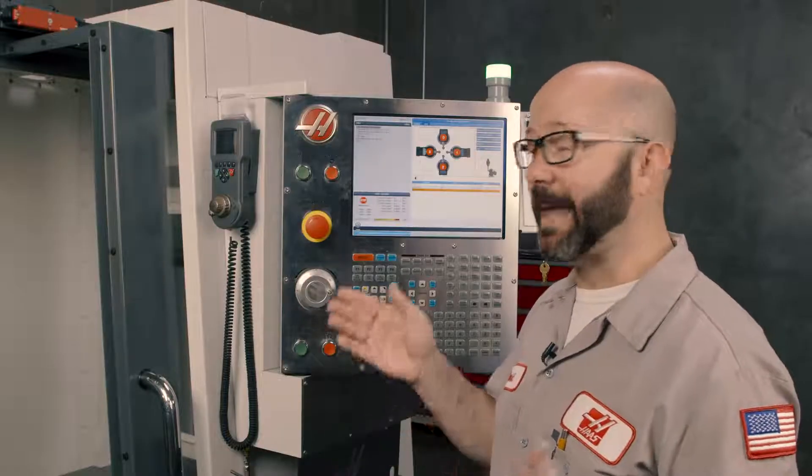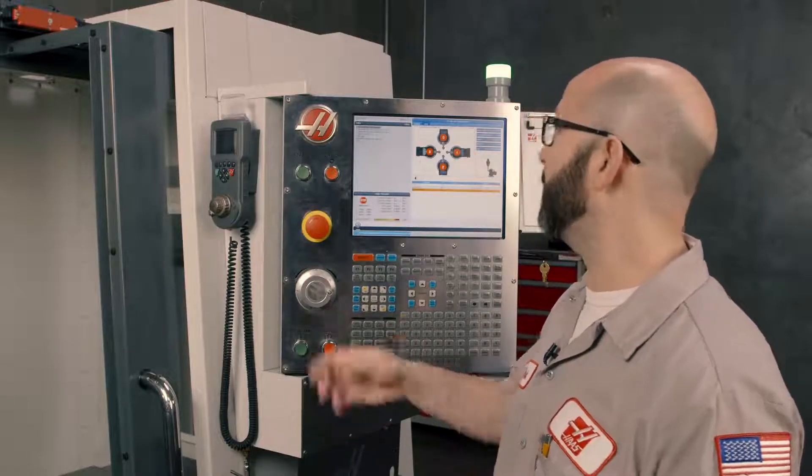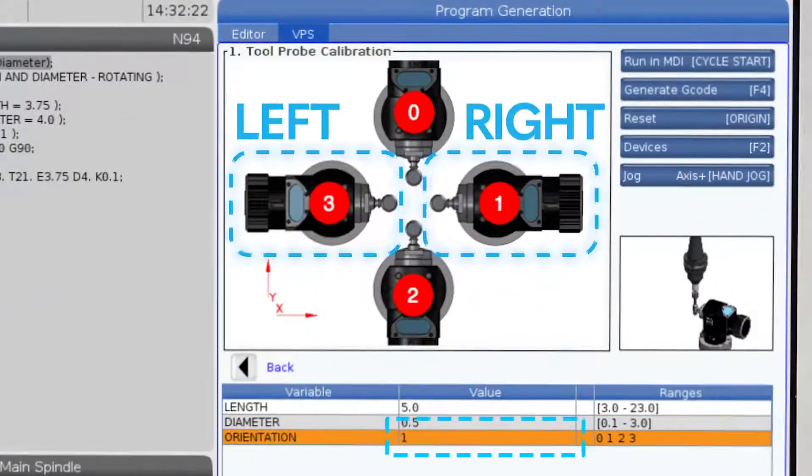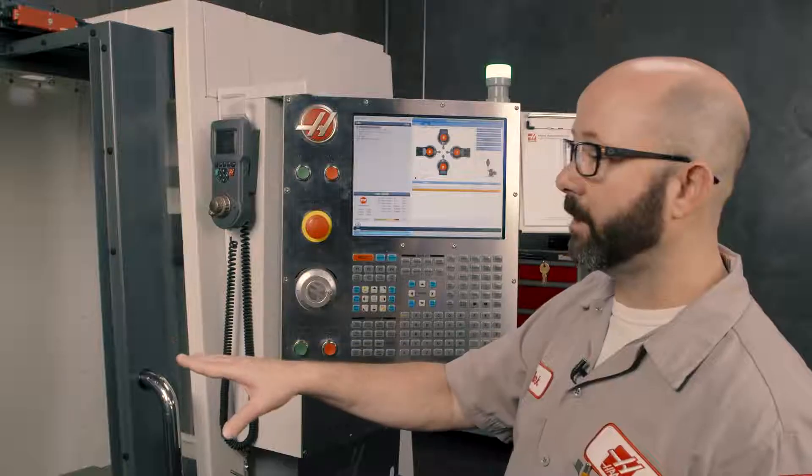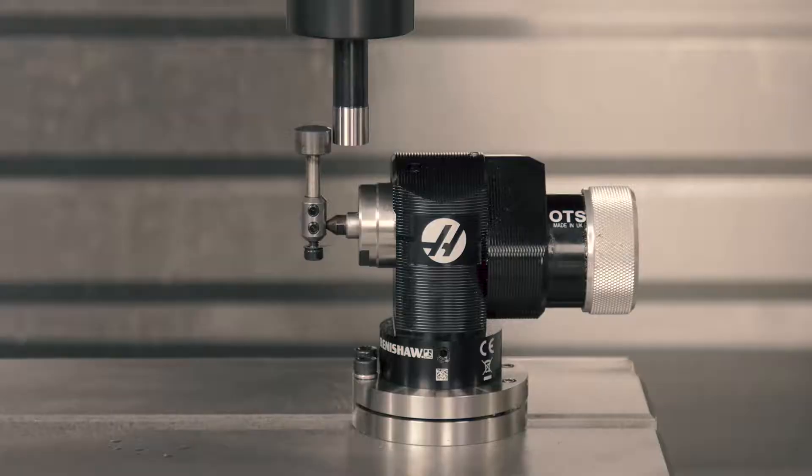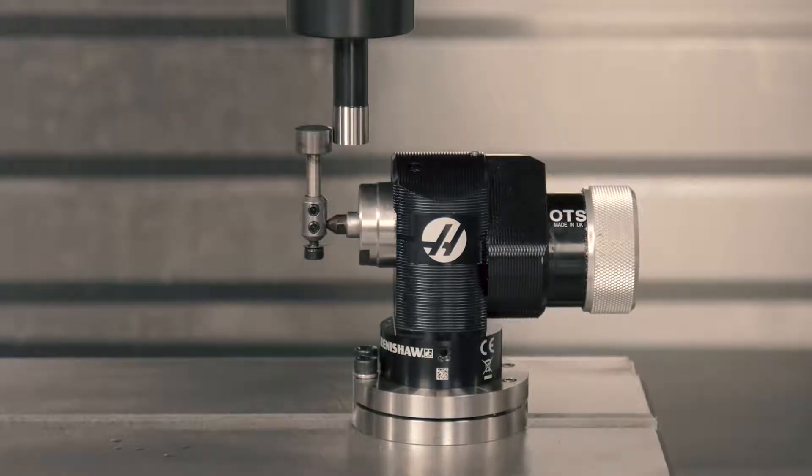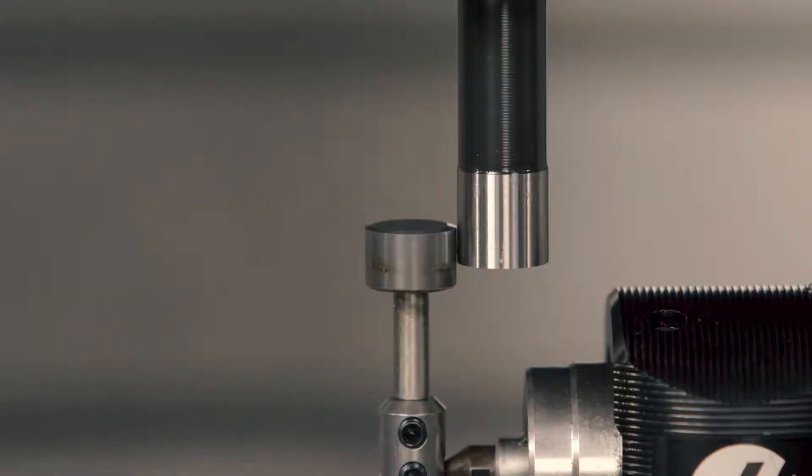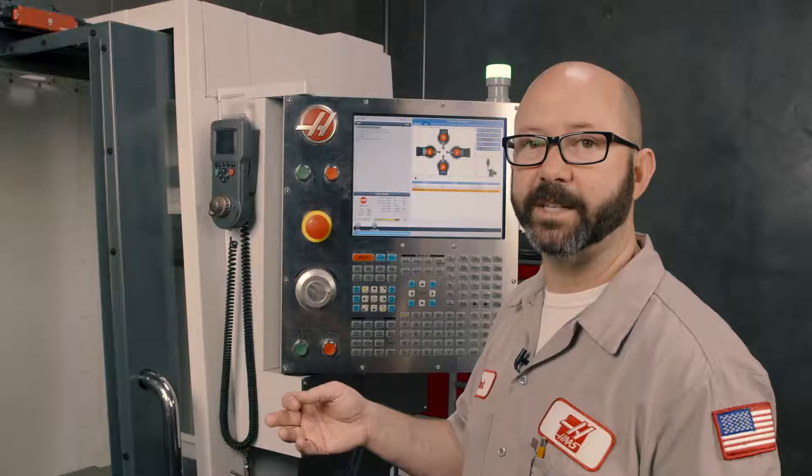Now all we've gotta do is calibrate the table probe, being sure to select the proper table position. On next gen controls, we might choose a one or a three. We're using a one for this template right now because our table probe's on the right side of the table. When we run this cycle, it only needs to come at this table probe from the right hand side during this calibration process.